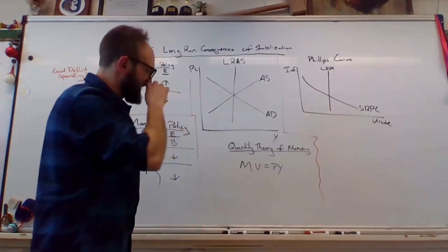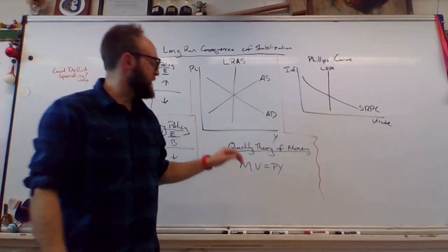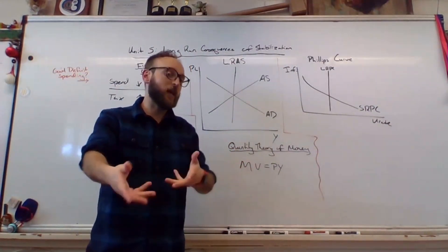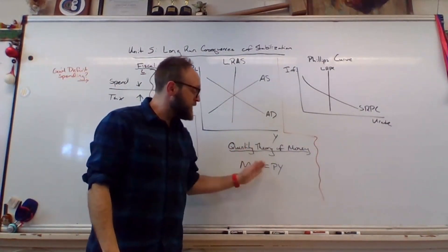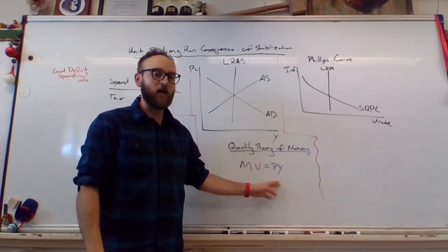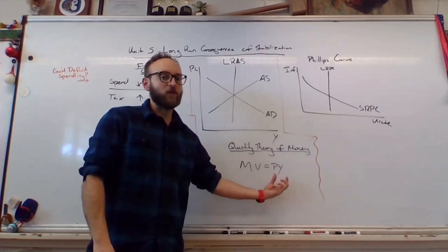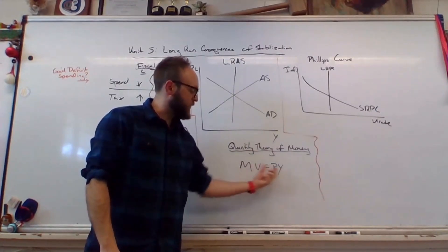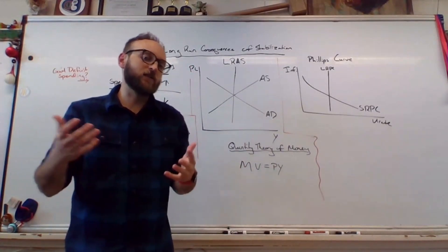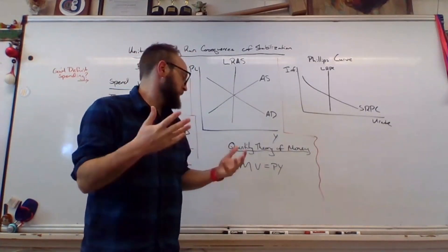The last thing to go over is this quantity theory of money, which is this idea that if you take the money supply times velocity—that's how fast a dollar changes hands—it will be equal to the price level times real GDP. These two things combined are just nominal GDP, and on the AP exam, they'll likely give you three out of four of these, and you'll have to figure out what the fourth thing is. Nothing too challenging there.